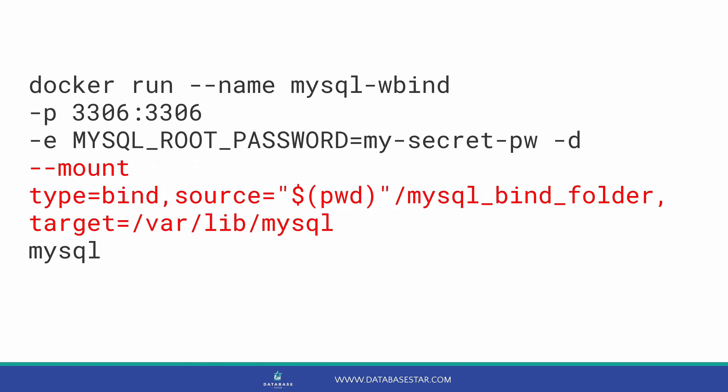The mount parameter is similar to creating a volume, but with a couple of differences. We have a parameter called type, which we specify as bind — the default is volume, which is why we didn't specify it earlier. The other difference is the source parameter. For a bind mount, we need to refer to the folder on our computer — the mysqlbind folder we just created. We also need to specify the full path to that folder. The easy way to do that is to use the pwd command, which will be replaced with the folder you are currently in. Ensure you surround it in quotes to make the command look correct. The target and everything else remains the same.